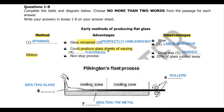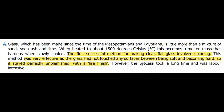The disadvantage of the spinning method is that it is slow. The other disadvantage is that it was labor-intensive. From the paragraph, the last line states: however, the process took a long time and was labor-intensive. So the process was long, slow, and labor-intensive.